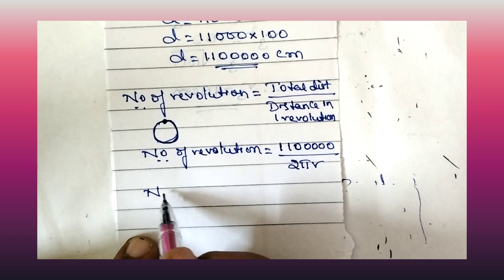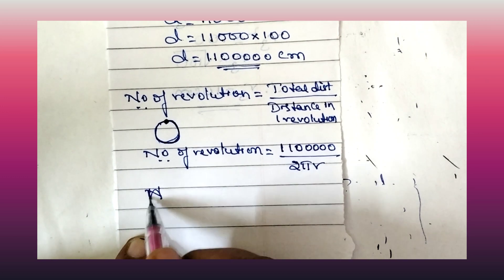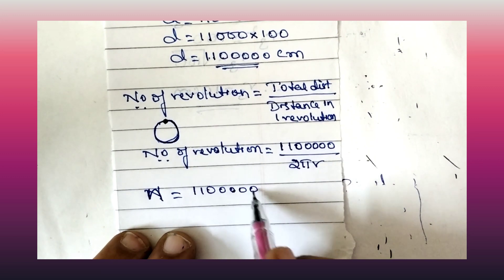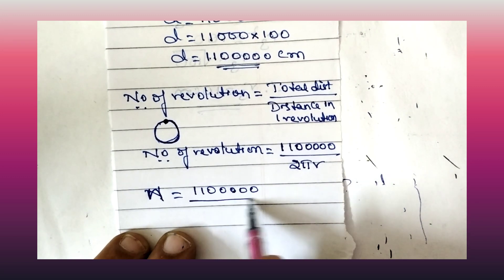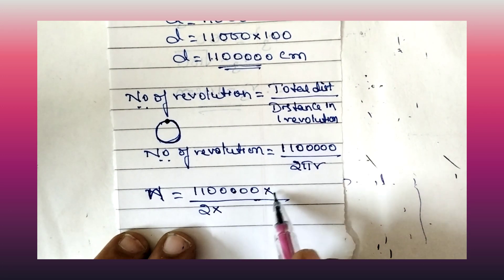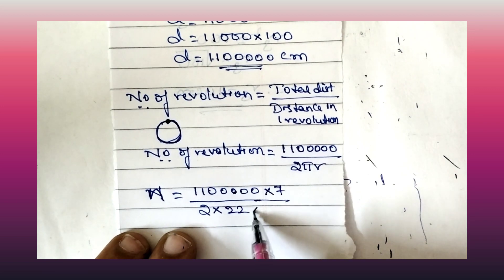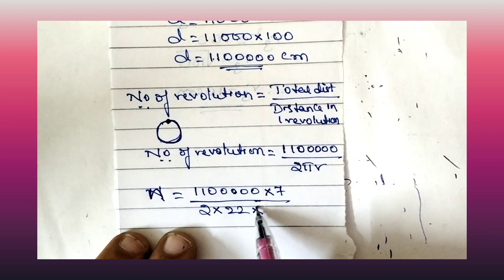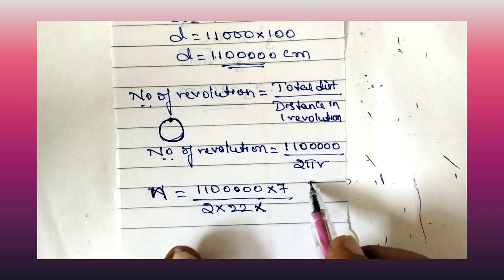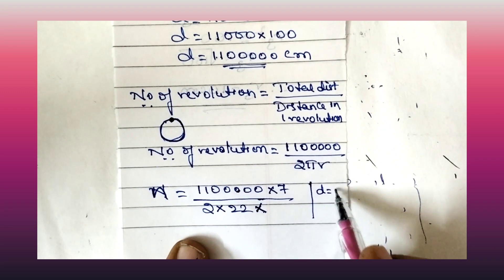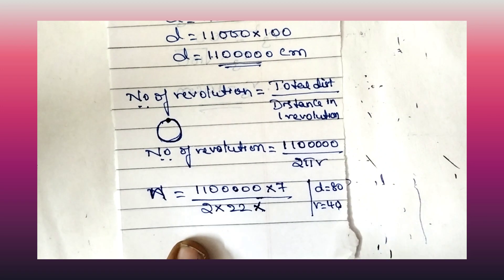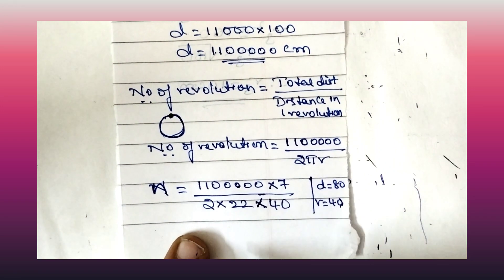Applying the formula: number of revolutions = total distance / circumference = 1,100,000 divided by 2πr. Since diameter is 80 cm, radius = 40 centimetre. So we divide 1,100,000 by 2 × (22/7) × 40.